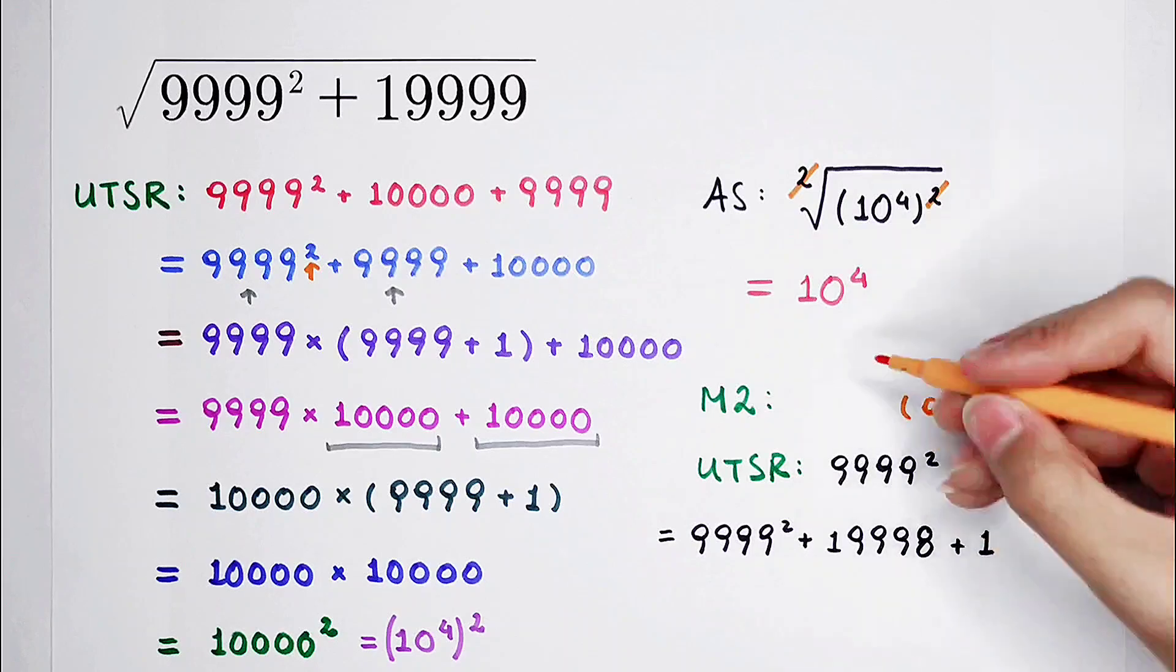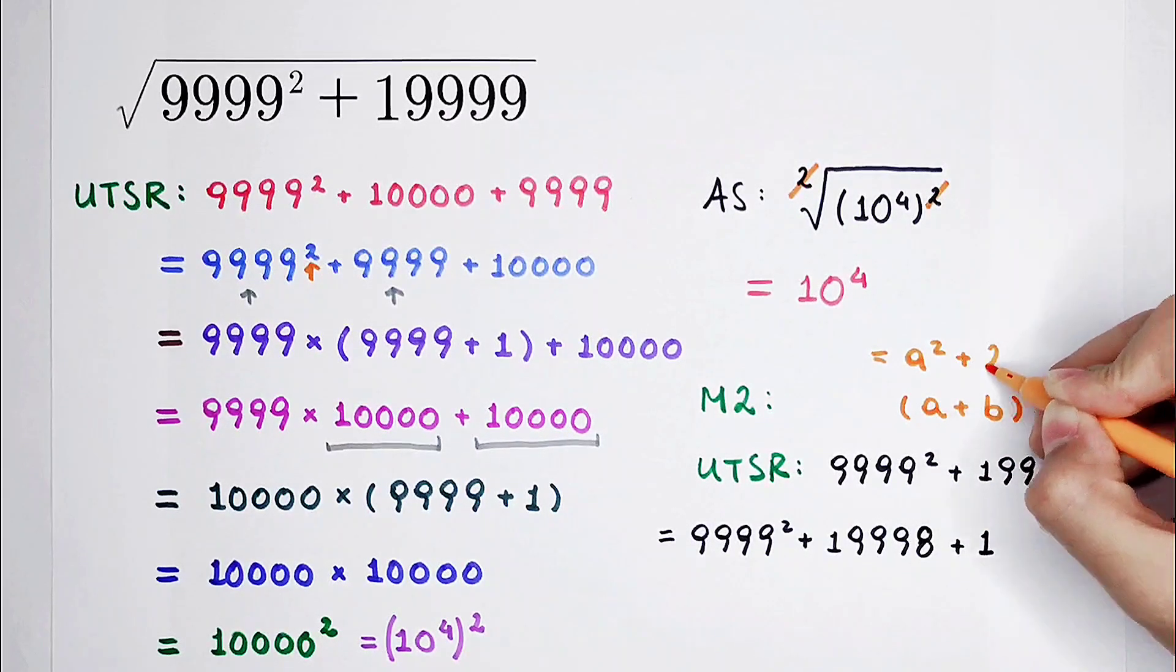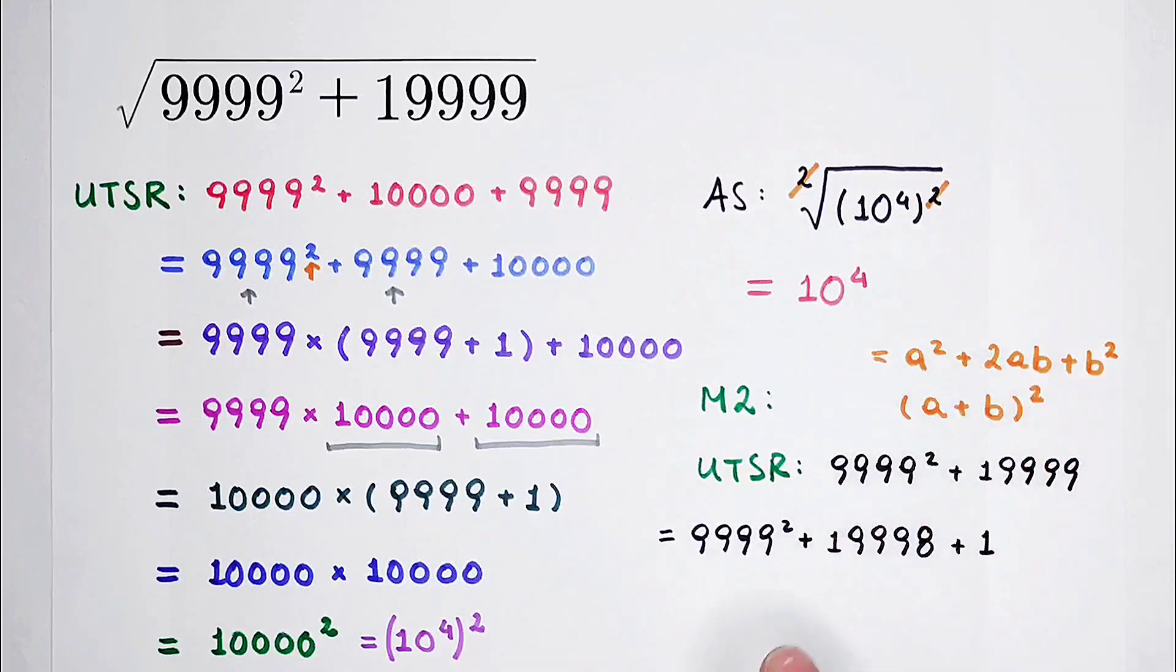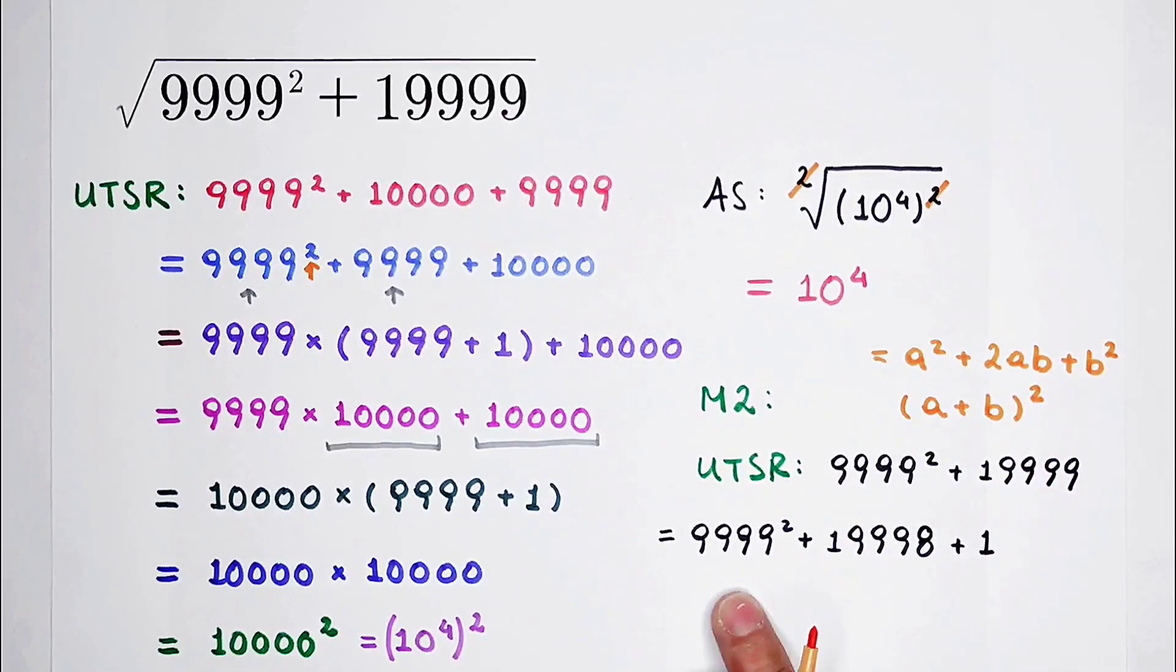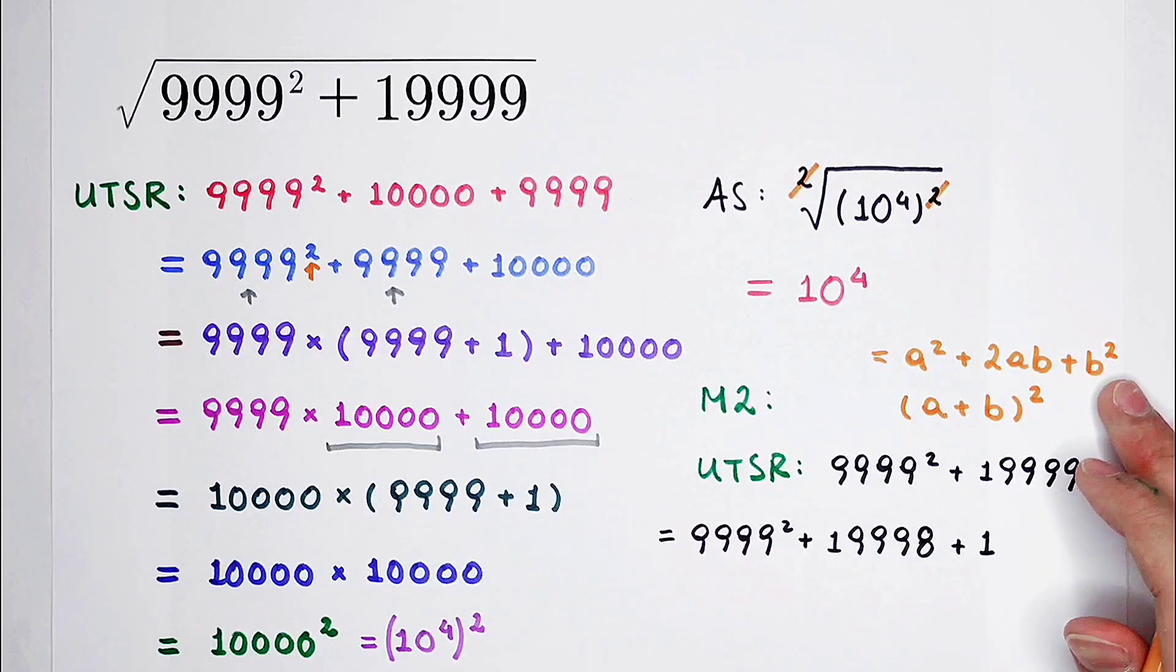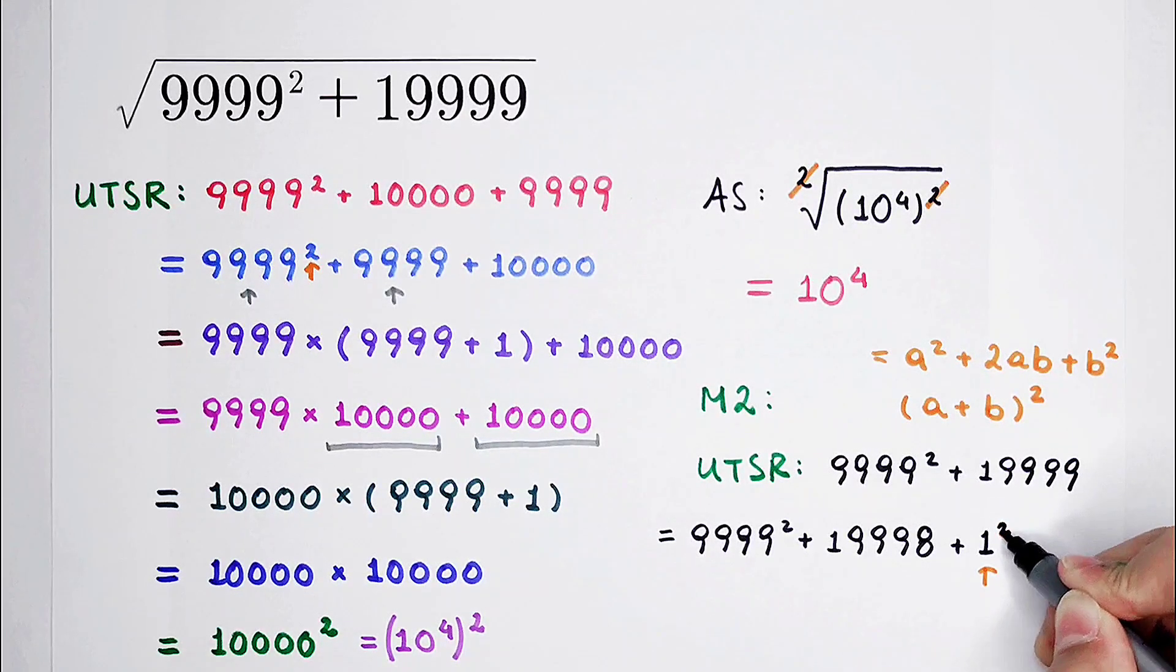So then, it is equal to A squared plus 2AB and then plus B squared. A squared, 9999 squared. And B squared, of course, we choose the most simple number, 1. And here is 1 squared. Of course, 1 is equal to 1 squared. Isn't it?